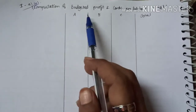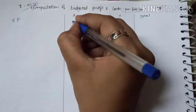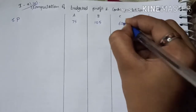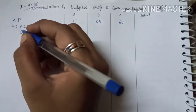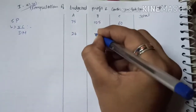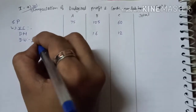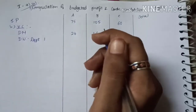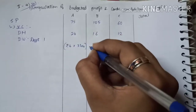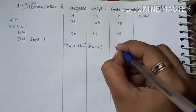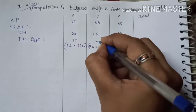First we compute the budgeted profit and contribution per labor hour in department 1. Selling price is 75, 105 and 60. Variable cost: direct material is 24, 16 and 12. For direct wages we calculate as follows. Department 1 rate is Rs 4 per labor hour: Rs 4 into 3 hours, Rs 4 into 5 hours, and Rs 4 into 2.5 hours, giving 12, 20 and 10.